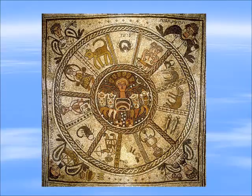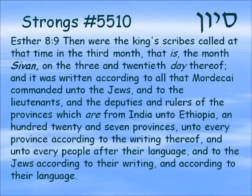We are currently in the third month which is known as Sivan. The name Sivan appears one time in Esther 8:9: 'Then were the king's scribes called at that time in the third month, that is the month of Sivan, on the three and twentieth day thereof, and it was written according to all that Mordecai commanded unto the Jews and to the lieutenants and the deputies and rulers of the provinces, which are from India unto Ethiopia, a hundred twenty and seven provinces, unto every province according to the writing thereof, and unto every people after their language, and to the Jews according to their writing and according to their language.'